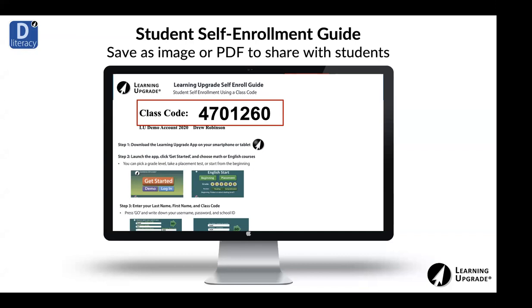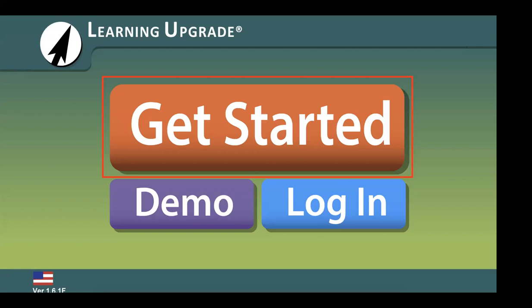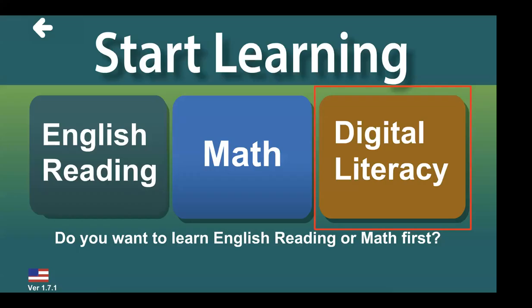With this single code sheet, you'll see the seven-digit class code, and we walk your learners through the exact steps to get started. Here are screenshots of what learners will see: number one, download the app; number two, click Get Started. They open up the app and click the big orange Get Started button. They'll then see our three course offerings — for those who want to get started right away with digital literacy, they click Digital Literacy; others can click math or English. Then they enter their first name and last name.